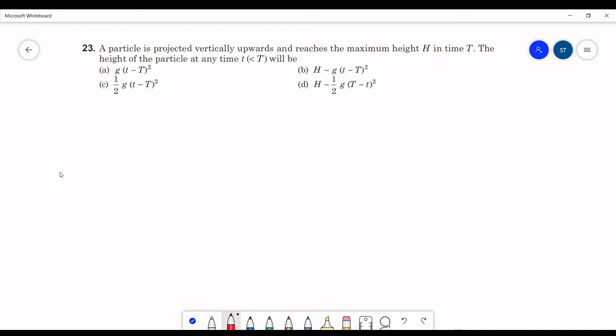Generally we can write h equals ut plus half a t squared, but we don't know about the initial velocity here.